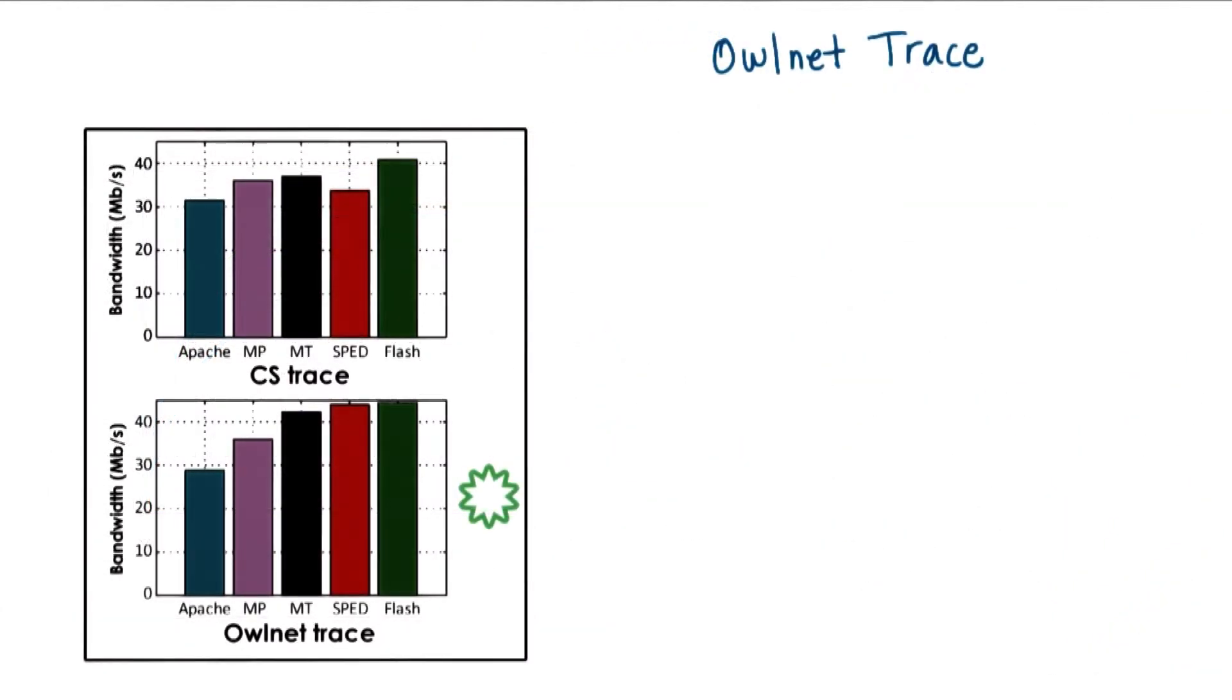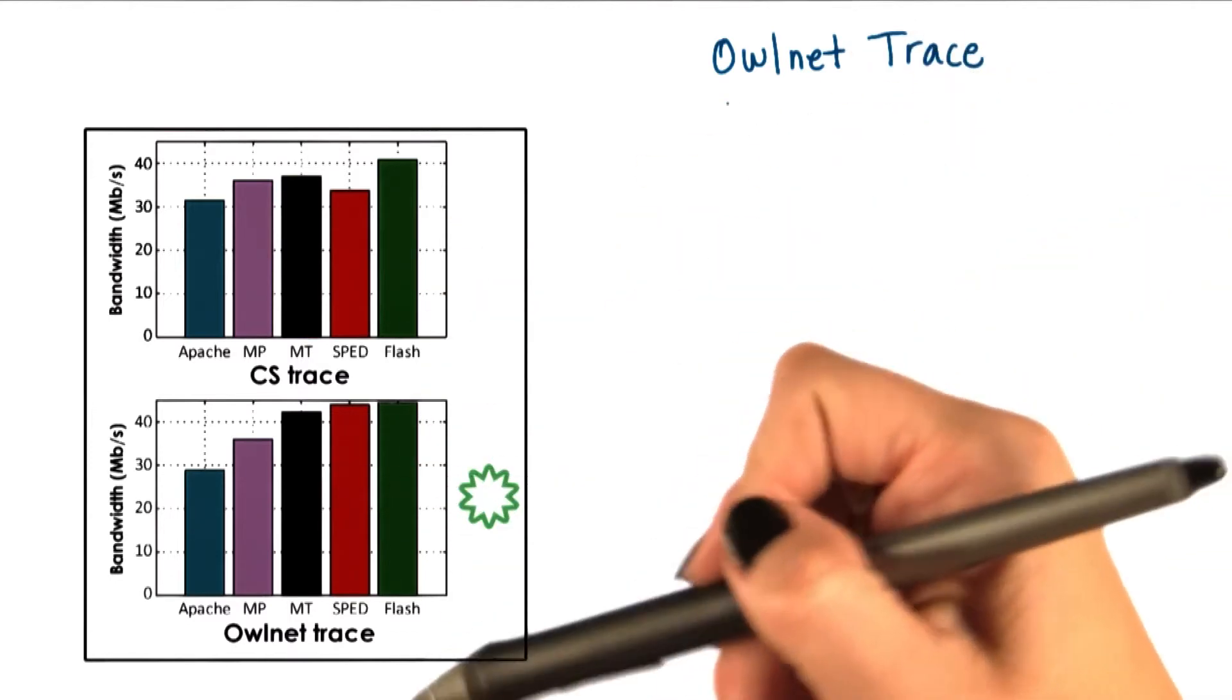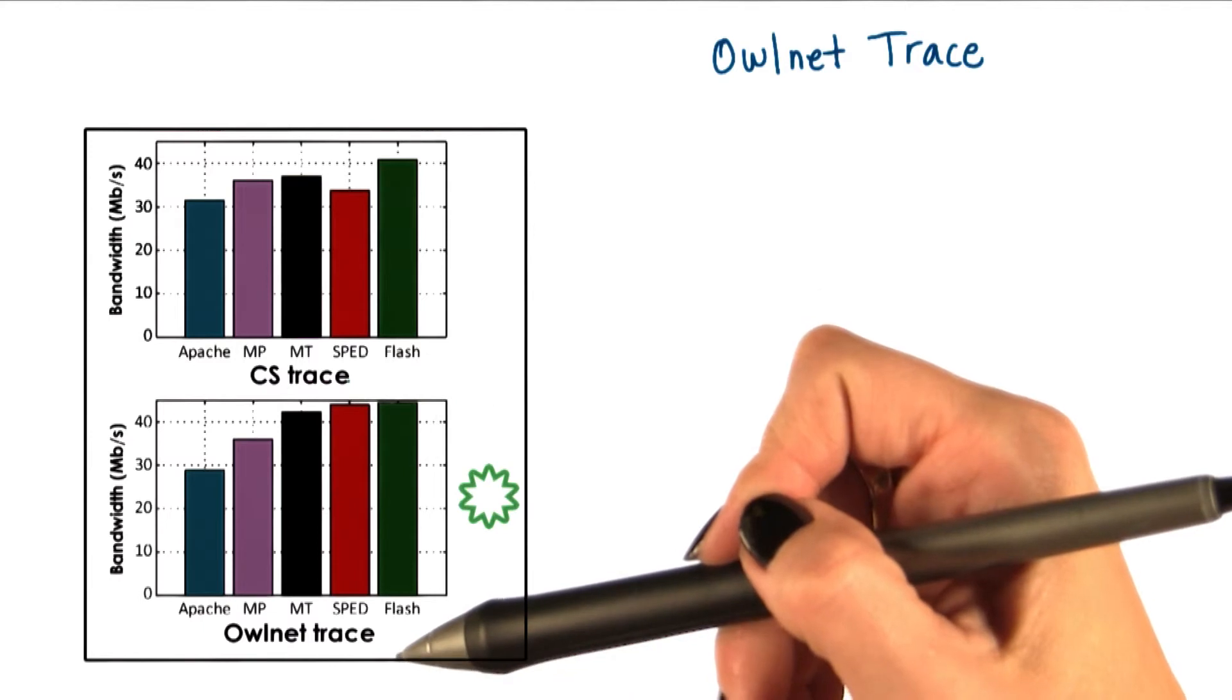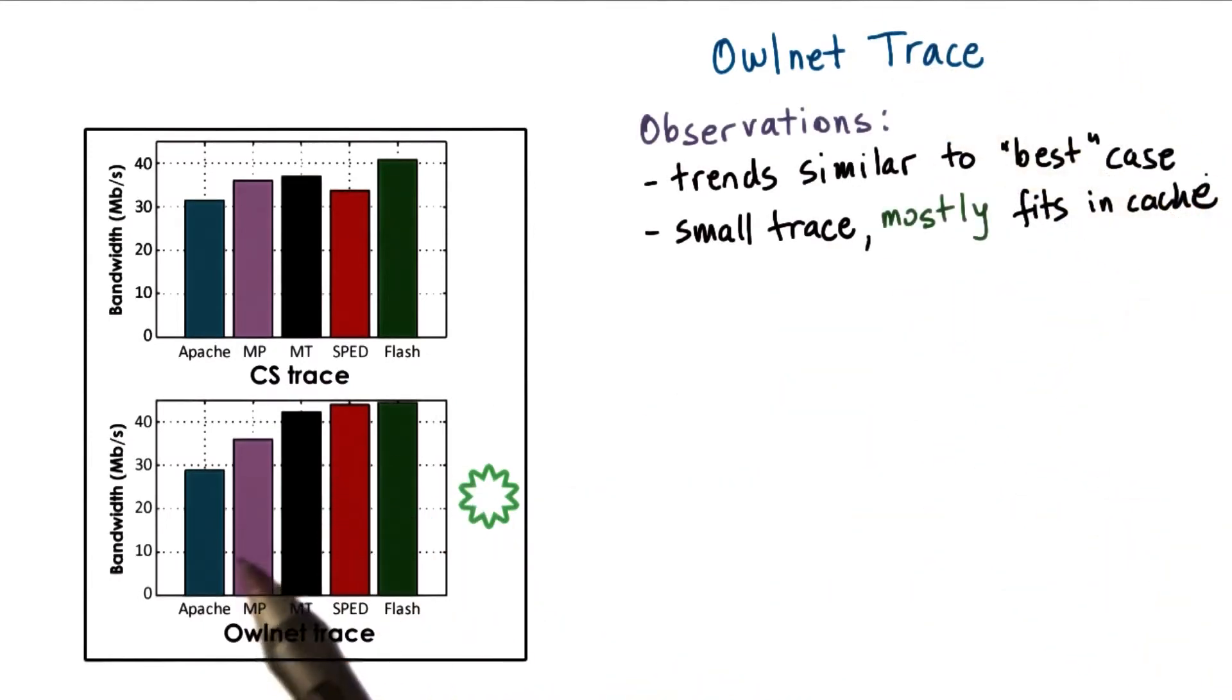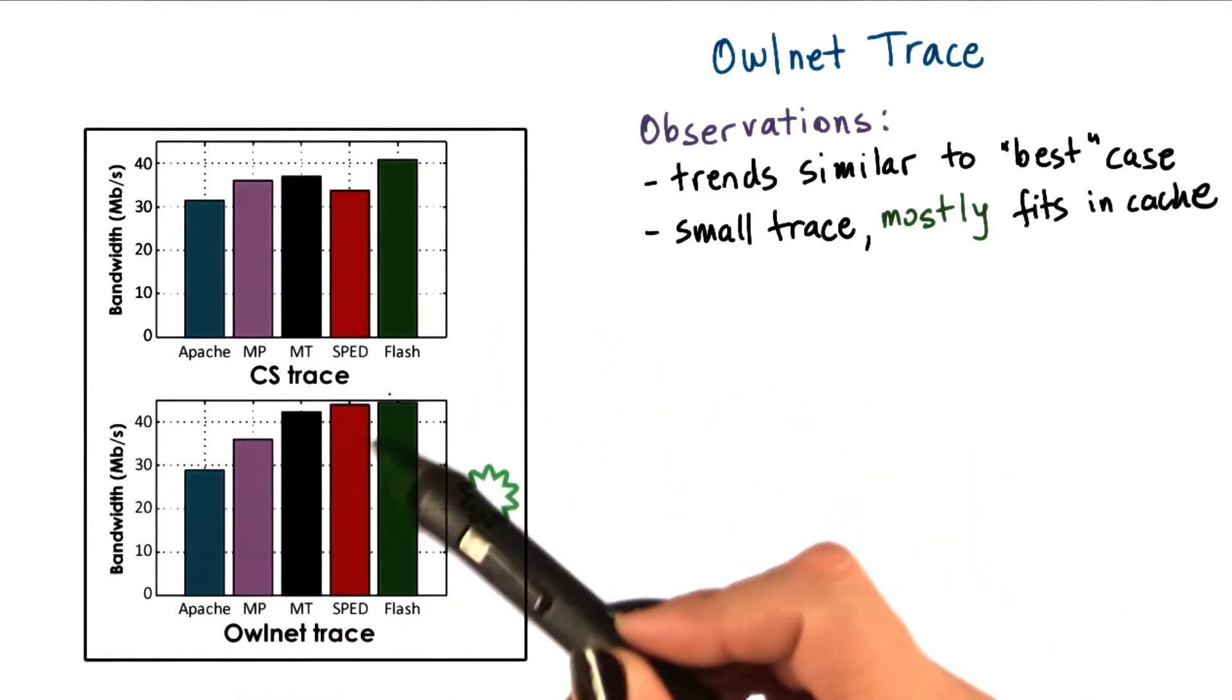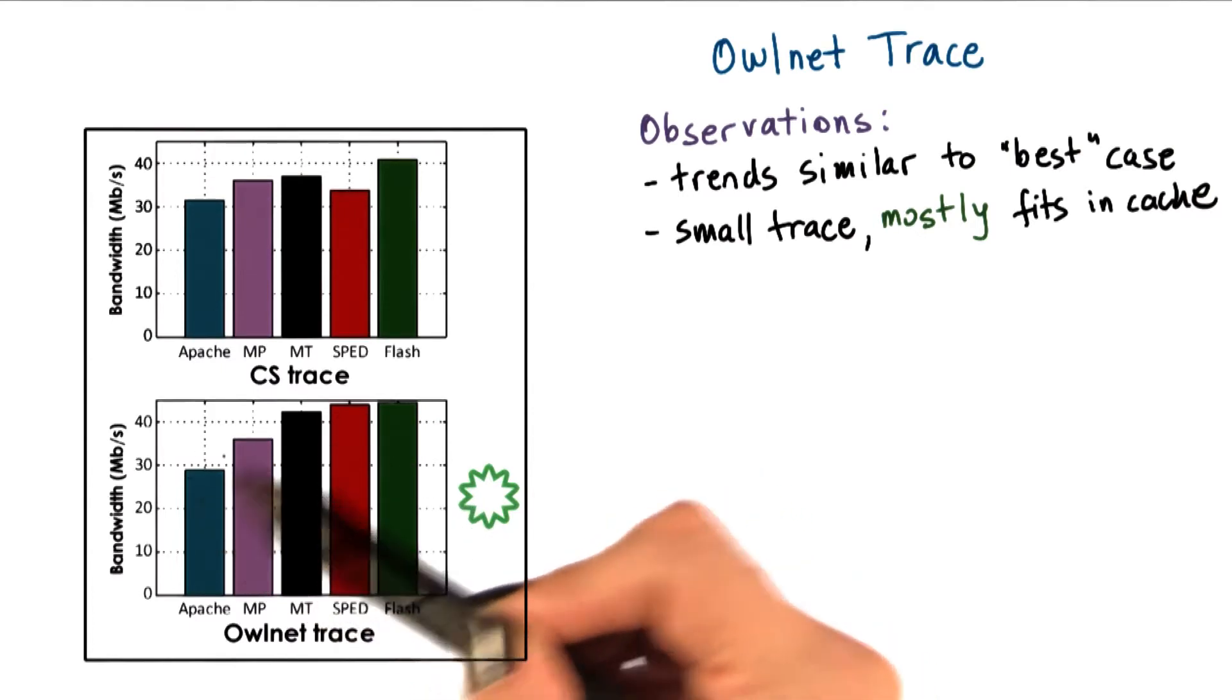Now, since real clients don't behave like the synthetic workload, we need to look at what happens with some of the realistic traces, the OwlNet and the CS trace. Let's take a look at the OwlNet trace first. First, we see that for the OwlNet trace, the performance is very similar to the best case, with sped and flash being the best, and then multithreaded, multiprocess, and Apache dropping down.